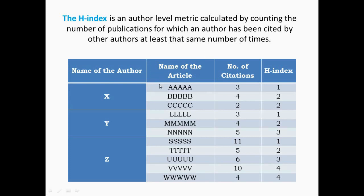For example, author A published article A, cited 3 times — H-index is 1. He published article B, cited 4 times — H-index is 2. He published article C, cited 2 times, but the H-index remains 2, because not all 3 articles are cited at least 3 times. Only when 3 of his articles are cited at least 3 times does the H-index become 3. In general, if N articles are cited at least N times, the H-index is N.